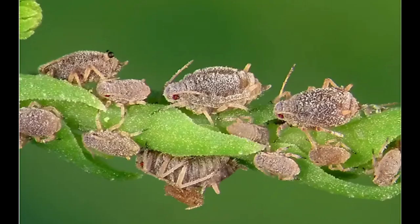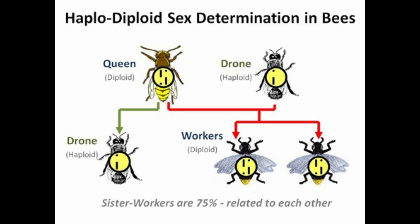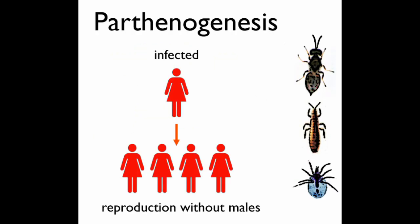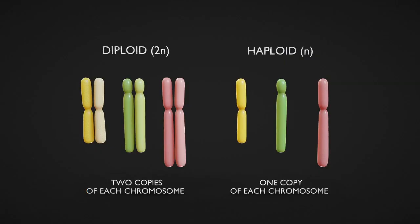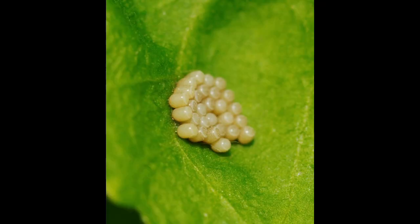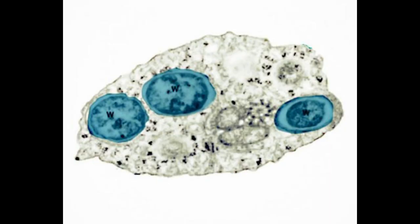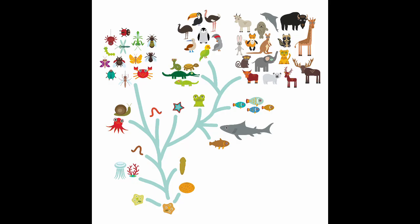Wolbachia-induced parthenogenesis occurs through the induction of diploidy in species with a haploid-diploid sex determination system. This form of female bias occurs in the order Hymenoptera, where males are haploid and females are diploid. Wolbachia, through the induction of diploidy, turns what should be unfertilised haploid male eggs into unfertilised diploid female eggs. Wolbachia itself may be partly responsible for the haploid-diploid system evolving, though it's not known 100% why this system has evolved.